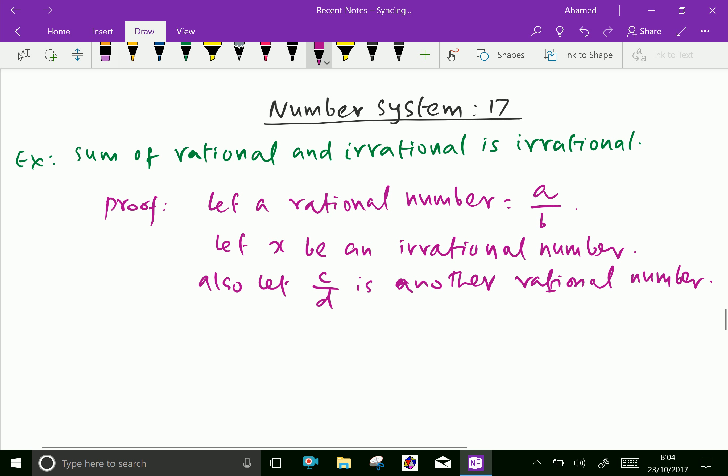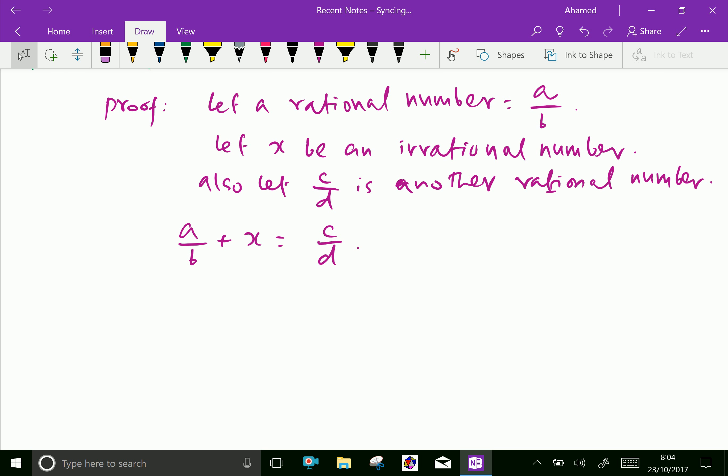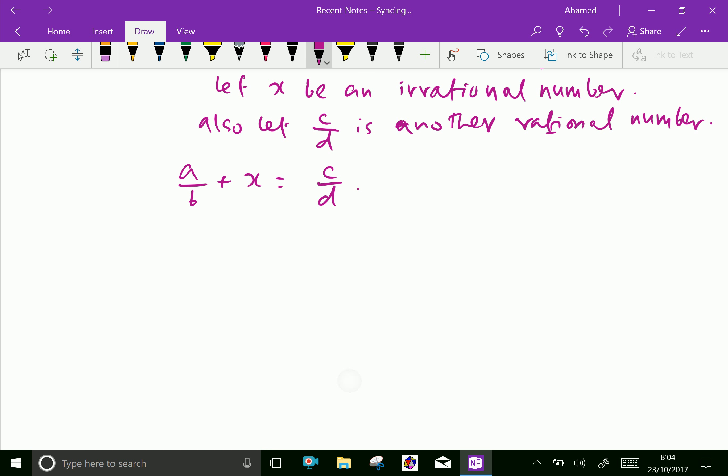We can express this as a/b + x = c/d, where a/b is rational, x is irrational, and c/d is rational. Then x = c/d - a/b. Taking LCM bd, we get bc minus ad over bd. By simplification, x = (bc - ad)/bd.